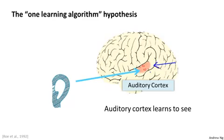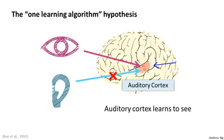This is just a hypothesis but let me share with you some of the evidence for this. This part of the brain, that little red part, is your auditory cortex. And the way you're understanding my voice now is your ear is taking the sound signal and routing it to your auditory cortex, and that's what's allowing you to understand my words. Neuroscientists have done the following fascinating experiments where you cut the wire from the ears to the auditory cortex and you rewire in this case an animal's brain so that the signal from the eyes, from the optic nerve, eventually gets routed to the auditory cortex. If you do this, it turns out the auditory cortex will learn to see.